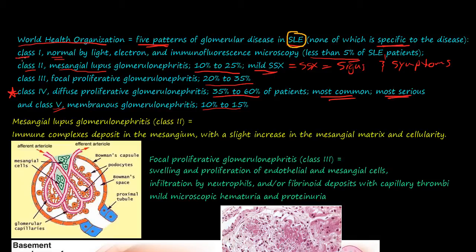The first one is class 1, and it's normal — less than 5%, there's nothing that you can see. Class 2 is when you can start seeing stuff, and it's called mesangial lupus glomerulonephritis. These mesangial cells lie adjacent to the afferent arteriole and the efferent arteriole, and they're spread throughout the glomerulus. What happens is these immune complexes deposit in the mesangium.